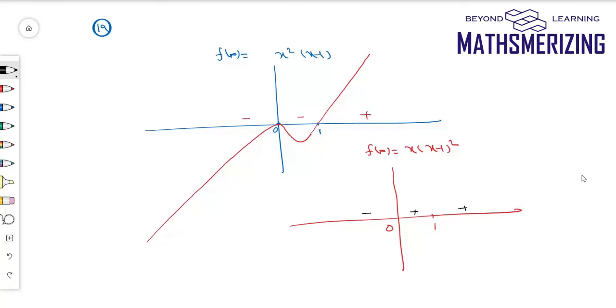So plus and then at 0 it will be minus. So this graph will start from minus infinity, then it will become positive, and at 1 it has a double root, so it will touch the x-axis at 1 and then again it will go to plus infinity.